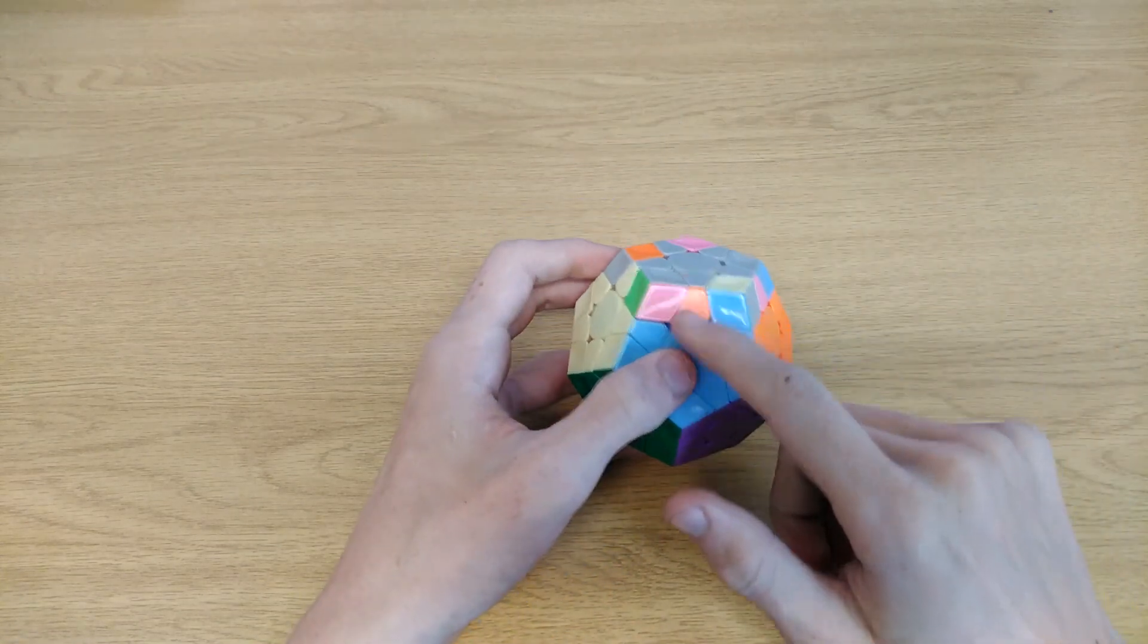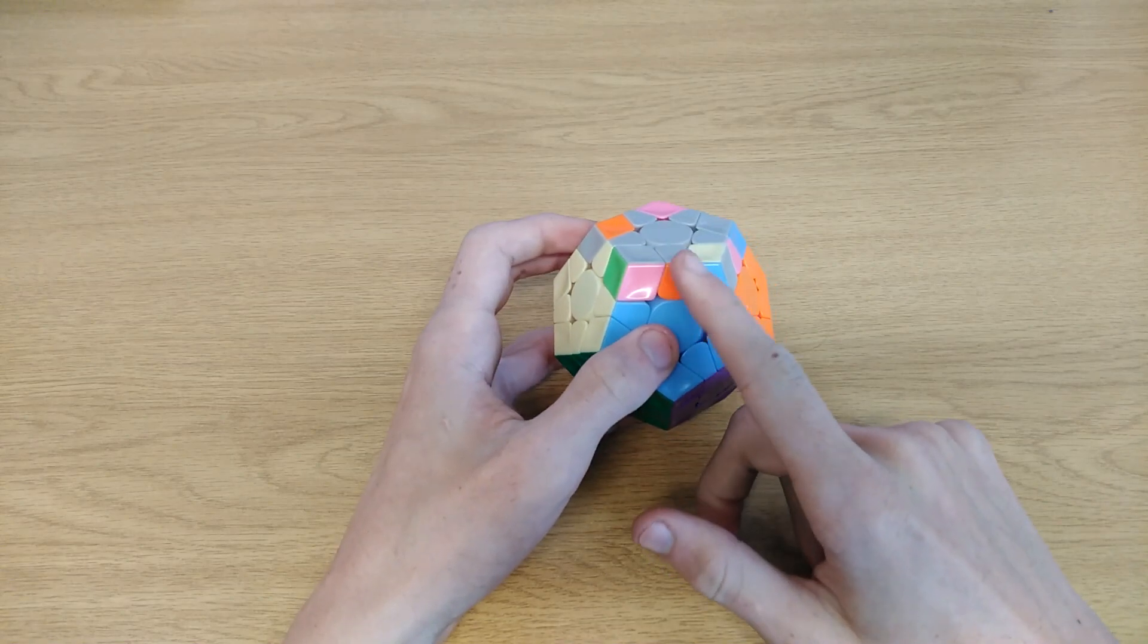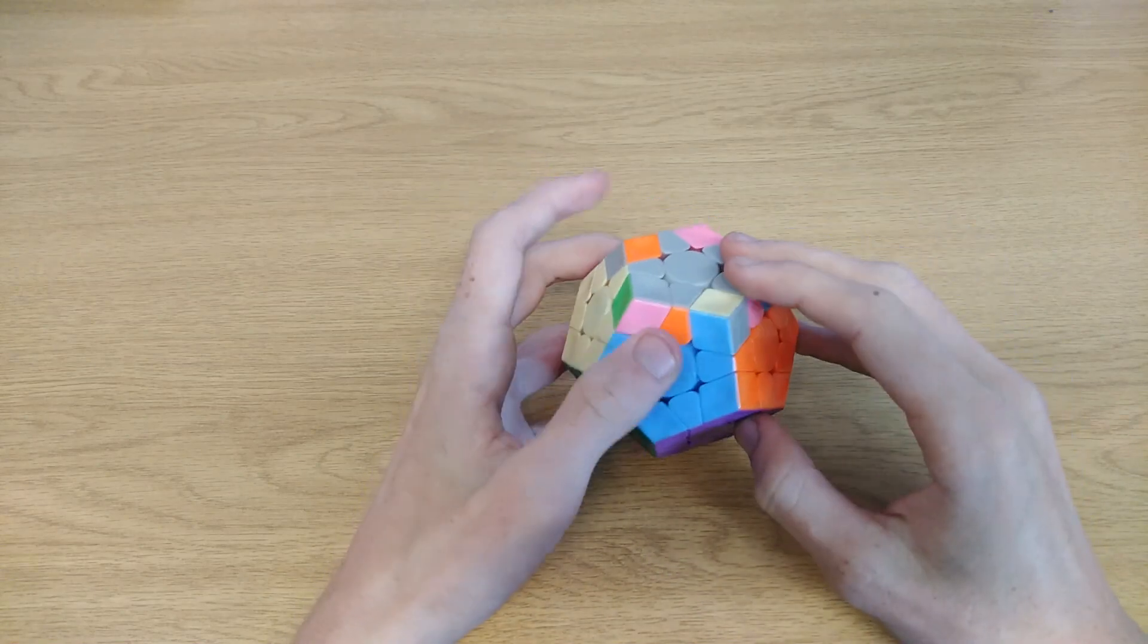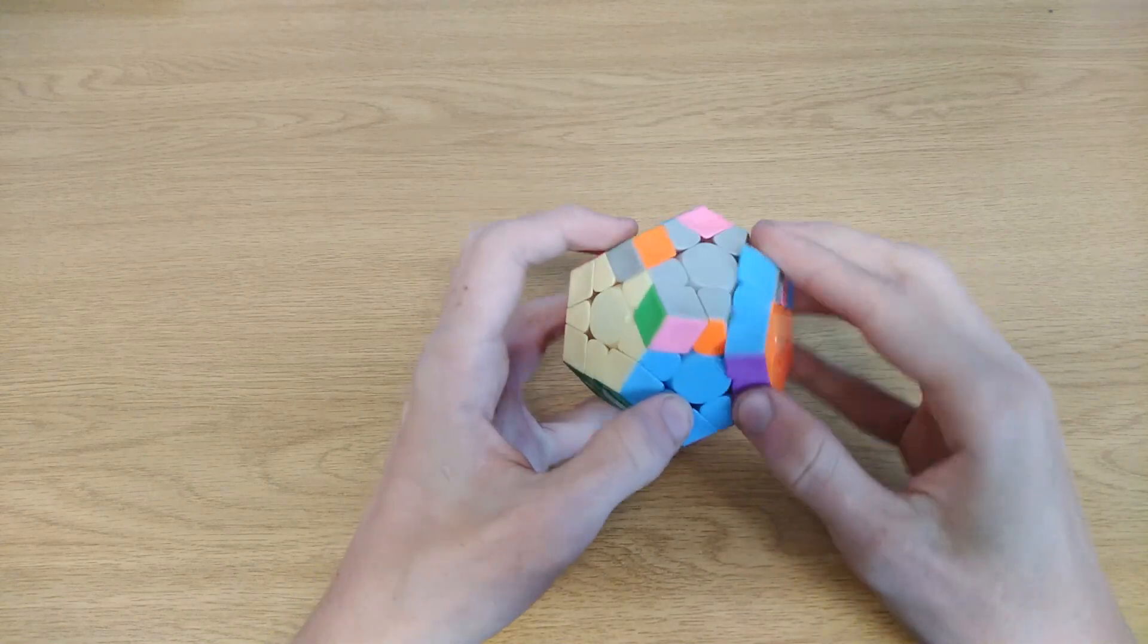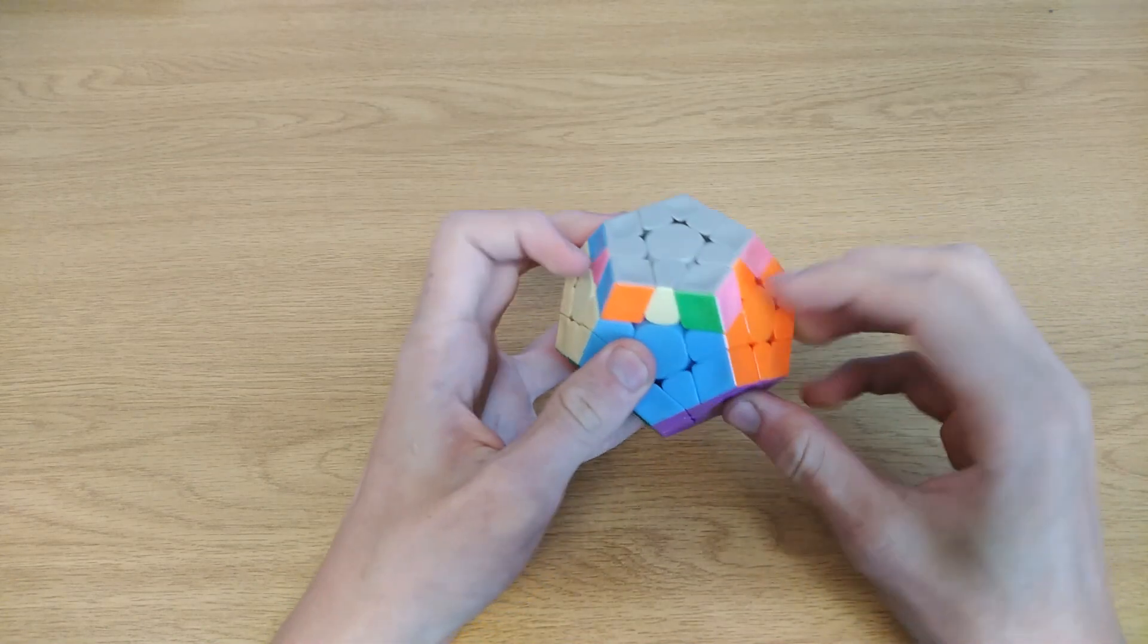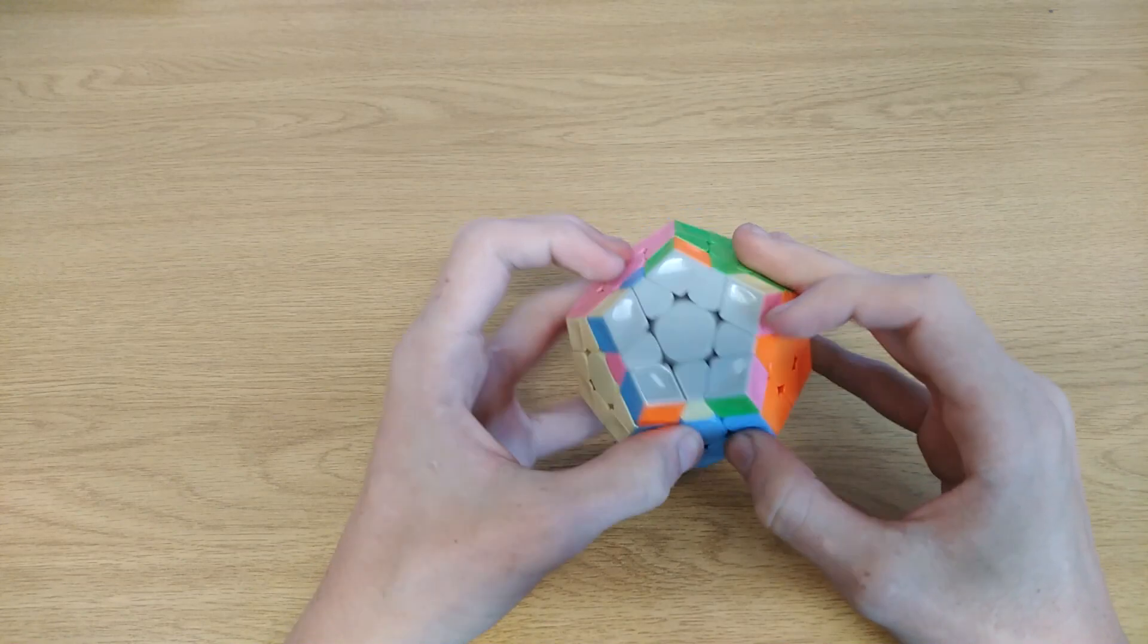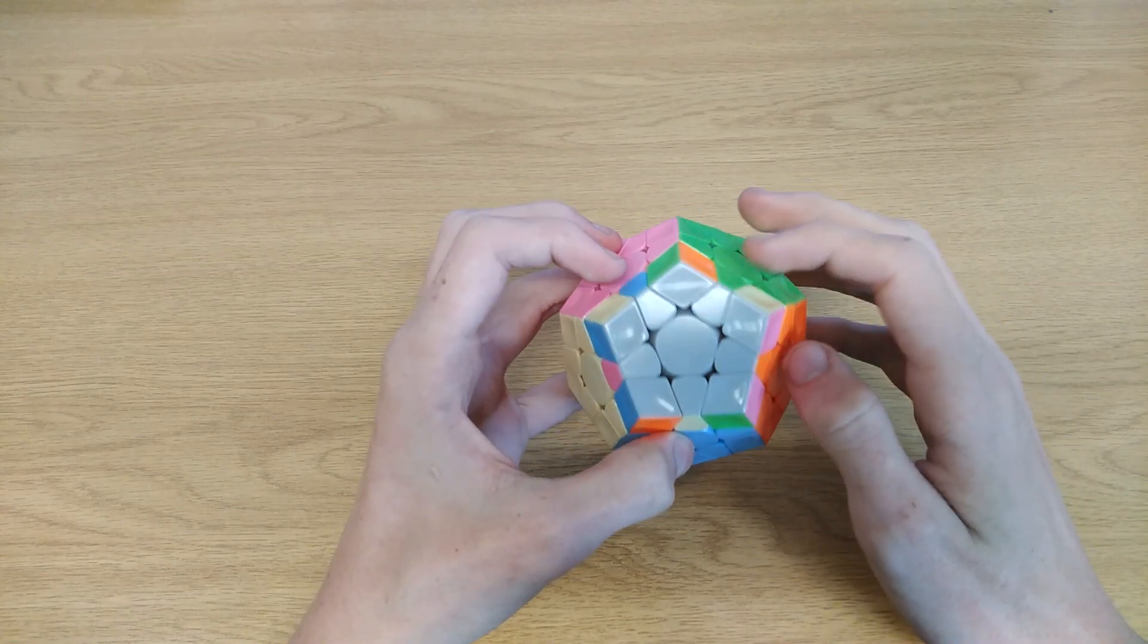With anti-Sune and Sune, I know this piece will stay the same. This edge will stay here. So I know once I do the algorithm, immediately afterwards I have to do a U' to align it here. So I'm going to do the algorithm and immediately align it here. And now I can quickly scan for the other piece.